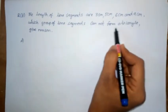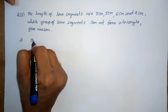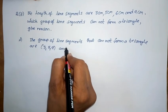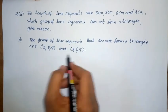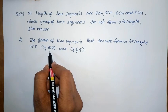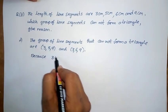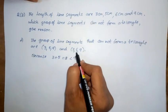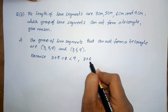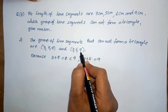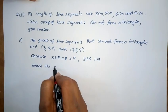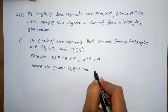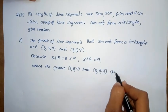Which group of line segments cannot form a triangle? Give the reason. The groups that cannot form a triangle are (3, 5, 9) and (3, 6, 9). Because for (3, 5, 9): 3 plus 5 equals 8, which is less than the third side 9. And for (3, 6, 9): 3 plus 6 equals 9, which is equal to the third side. So hence, the groups (3, 5, 9) and (3, 6, 9) cannot form a triangle.